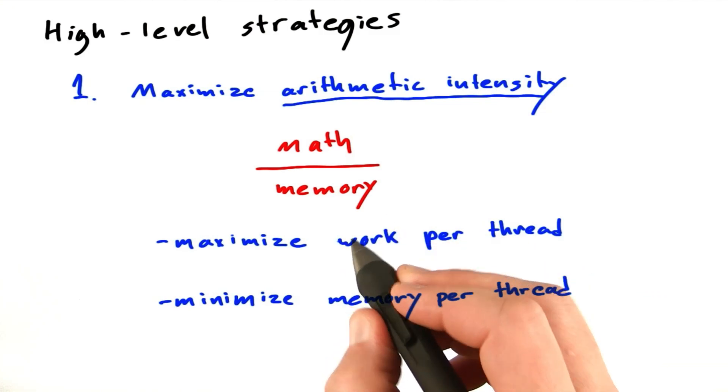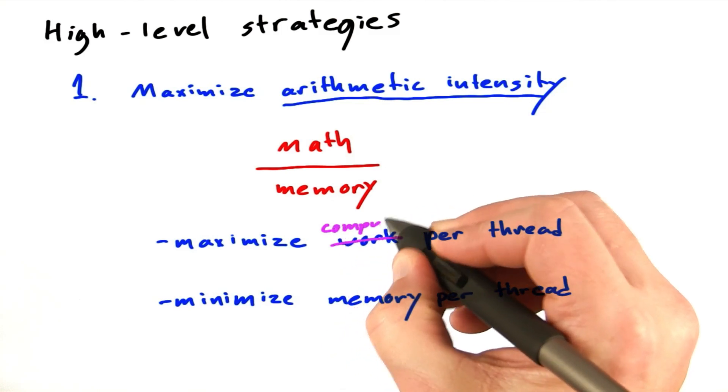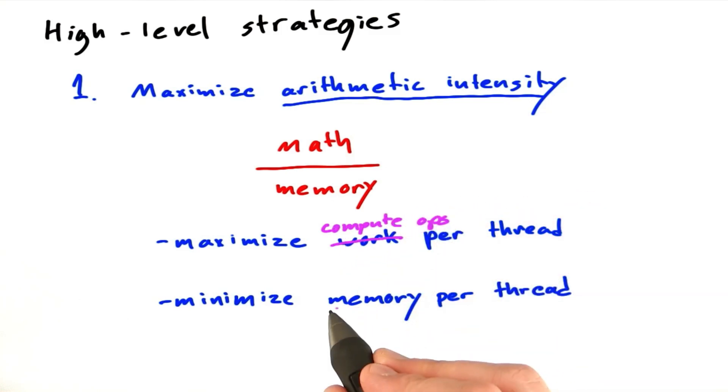Really what we're talking about is maximizing the number of useful compute operations per thread. And really what we care about here is minimizing the time spent on memory per thread.